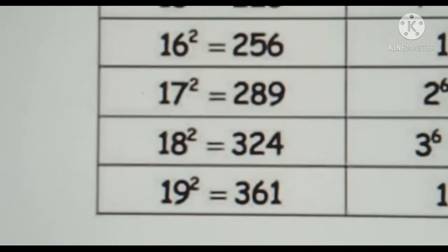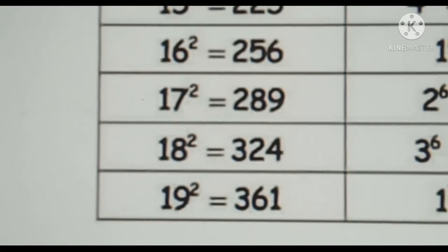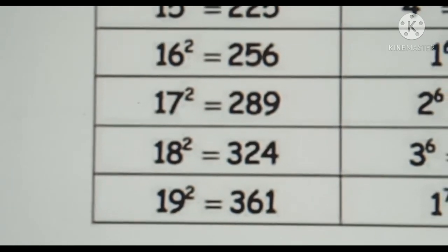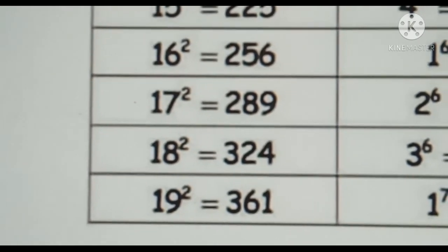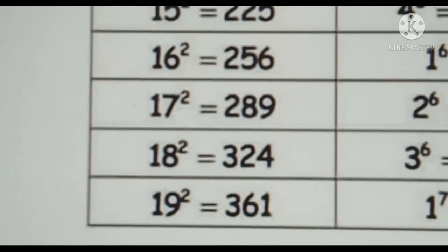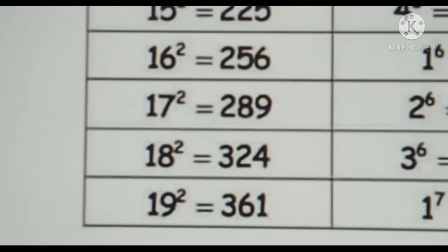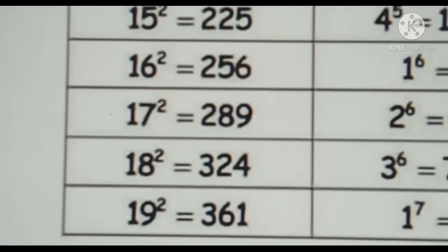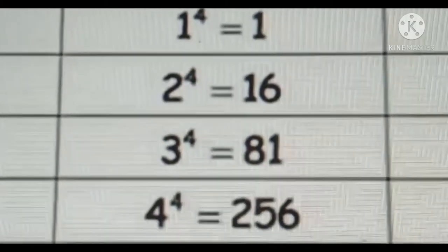17 squared is equal to 289, 18 squared is equal to 324, 19 squared is equal to 361.